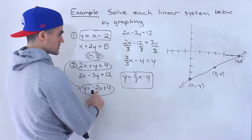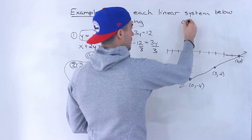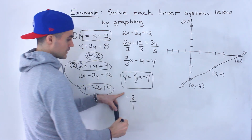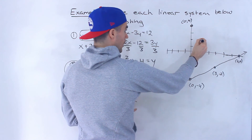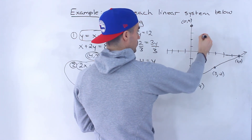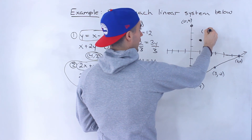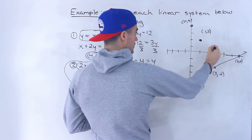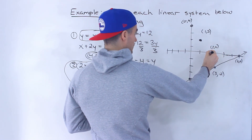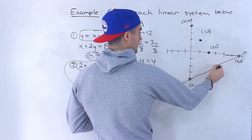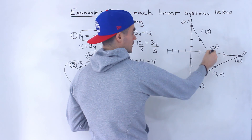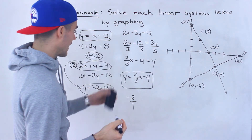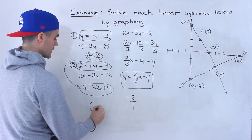And then this line, y equals negative 2x plus four, is going to start at zero and positive four. The slope is negative two over one, so we go down two and run one — that would be at one and two. Then go down two, run one — at two and zero. Then down two, run one — and that's the point where these two lines intersect, at three and negative two. That's the answer: three and negative two.